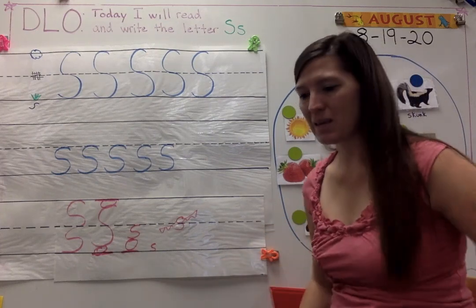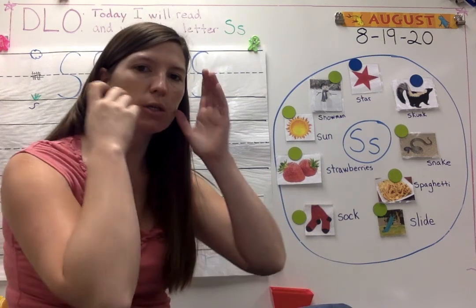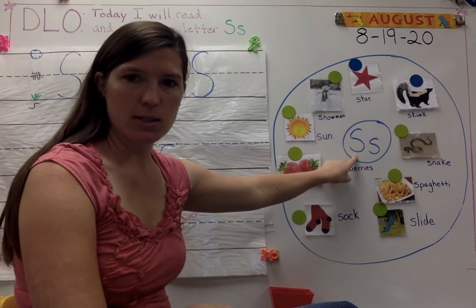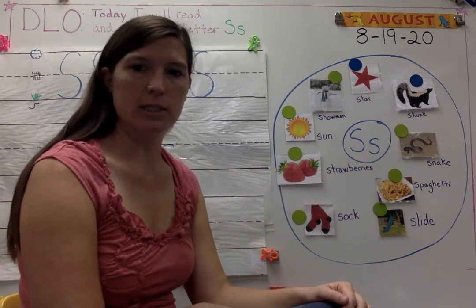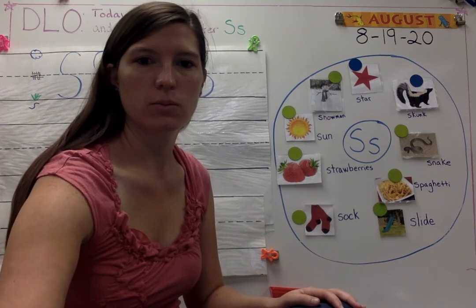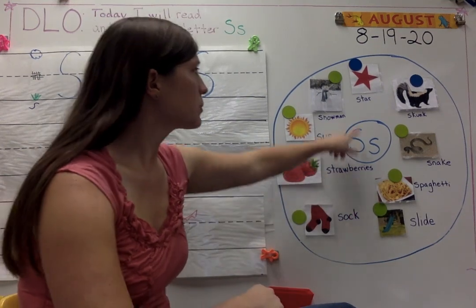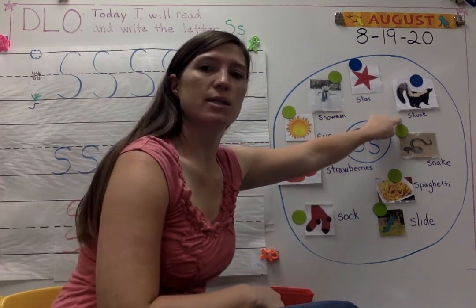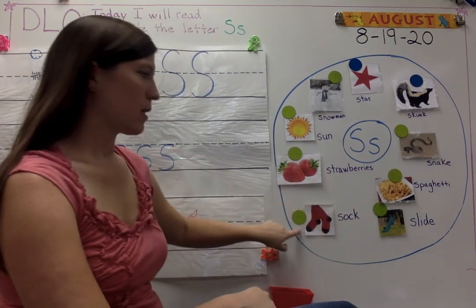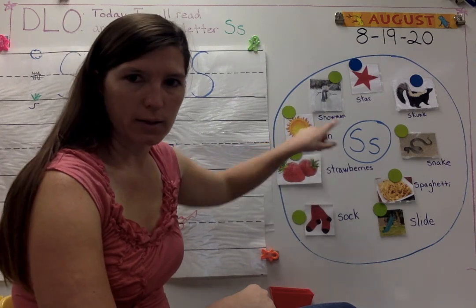Let's review some words that begin with the letter s. When they begin with the letter s, it's the initial sound. Initial is the first sound. Initial means first. We'll review these ones, and then you can get started in your books. Okay. Everybody say s. S. What's the sound? Very good. Now, there's construction going on next door. I don't know if you can hear it, but it is loud. Okay. Let's go over our s's. Say star. Skunk. Snake. Spaghetti. Slide. Sock. Strawberries. Sun. Snowman. Nice job.